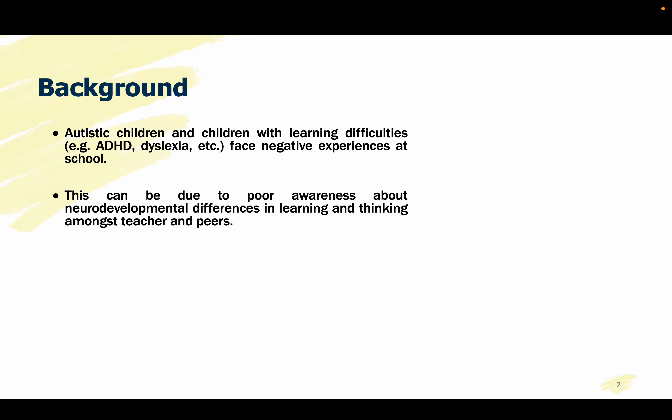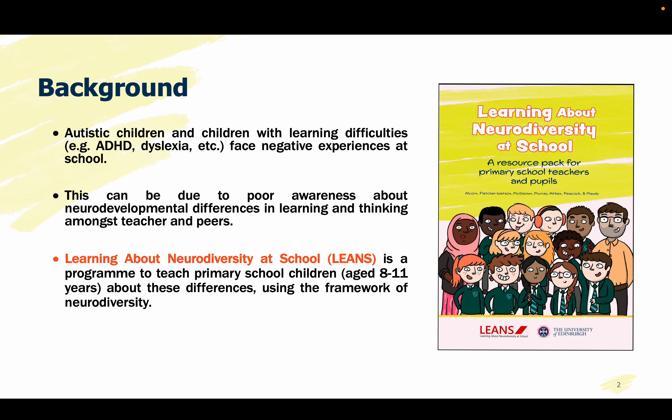I'll start by setting the context a little. Autistic children and children with learning difficulties often face negative experiences at school such as increased bullying and poorer mental health. This can stem from poor awareness about neurodevelopmental differences in learning and thinking amongst their peers, which can result in negative attitudes. Learning about Neurodiversity at School, or LEANS, is a program designed to teach primary school children about these differences using the framework of neurodiversity.